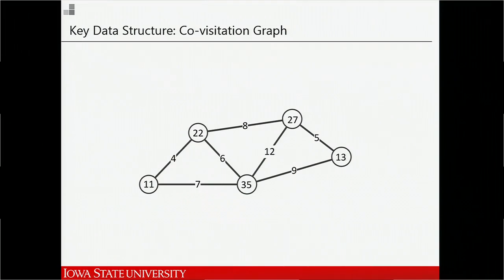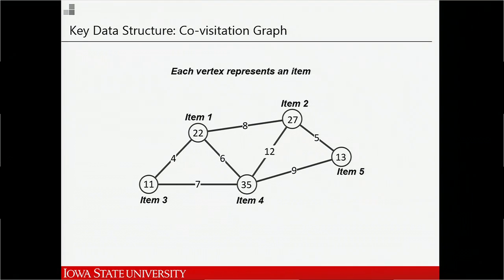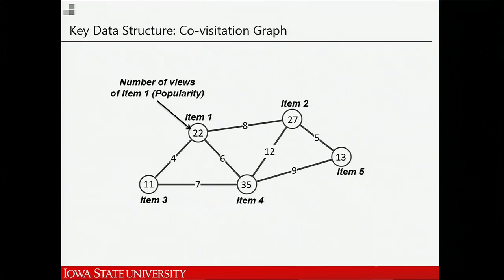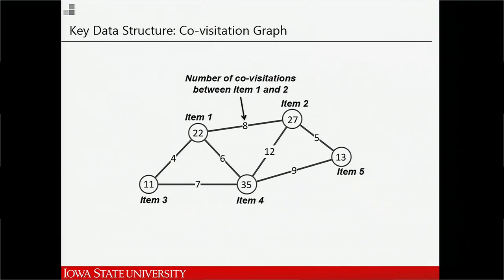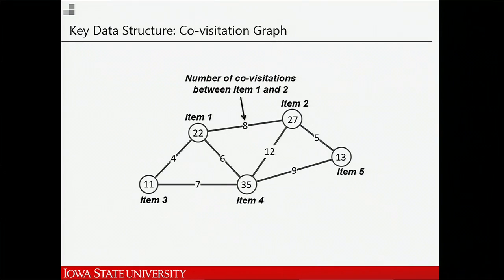The key data structure behind the covisitation-based recommendation system is a graph called the covisitation graph. It's an undirected, edge-weighted, and vertex-weighted graph. Each vertex represents an item — in this simple example graph, we have four nodes, so four items. The weight on each vertex represents the number of views accumulated by that item, also called the popularity of the item. The weight on the edge is the number of covisitations between two items. For example, item one and item two have been viewed together at least eight times. By 'viewed together,' I mean at least one user viewed these two items within the same browser session — open the browser, click on item one, view it for a few minutes, then click on item two.